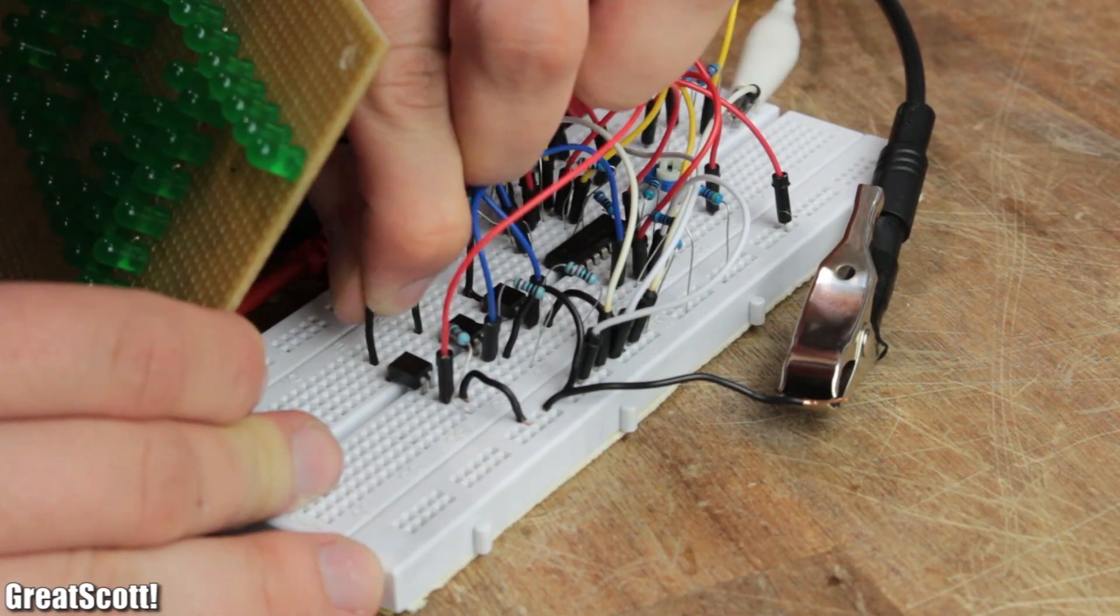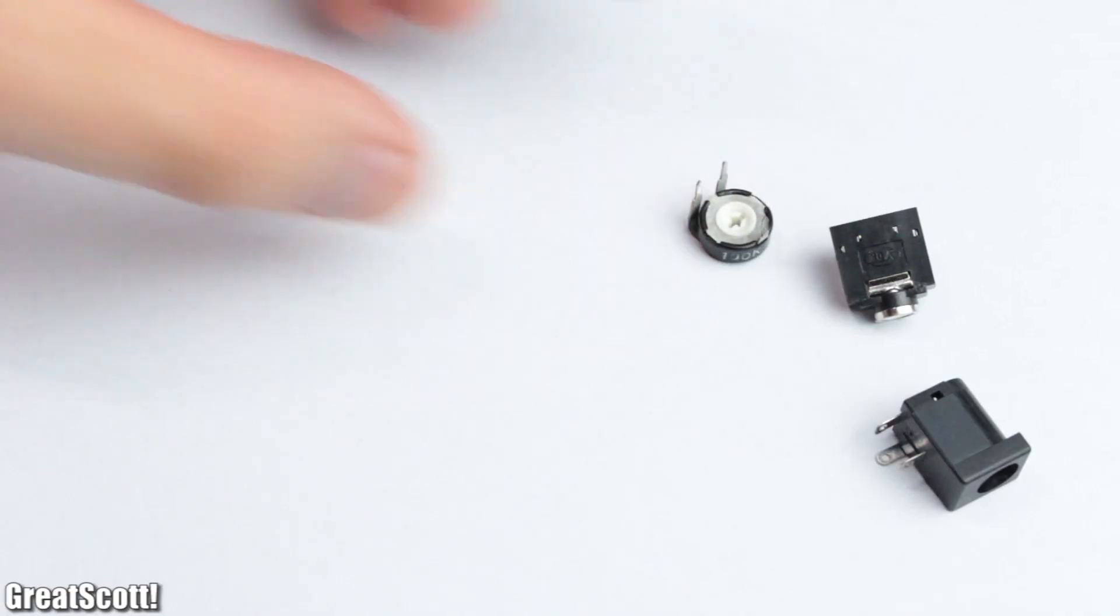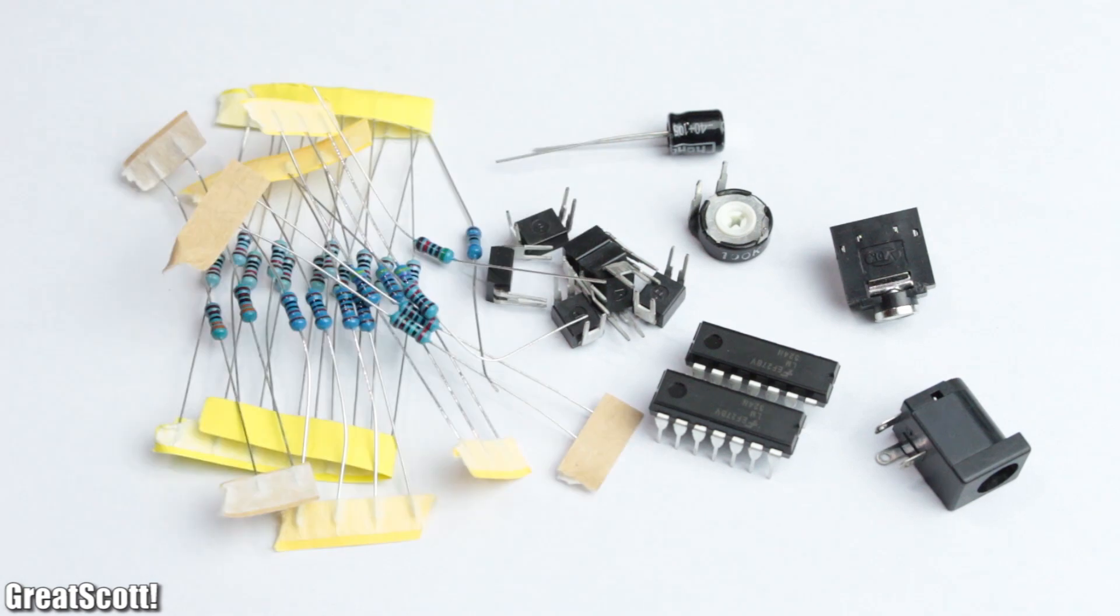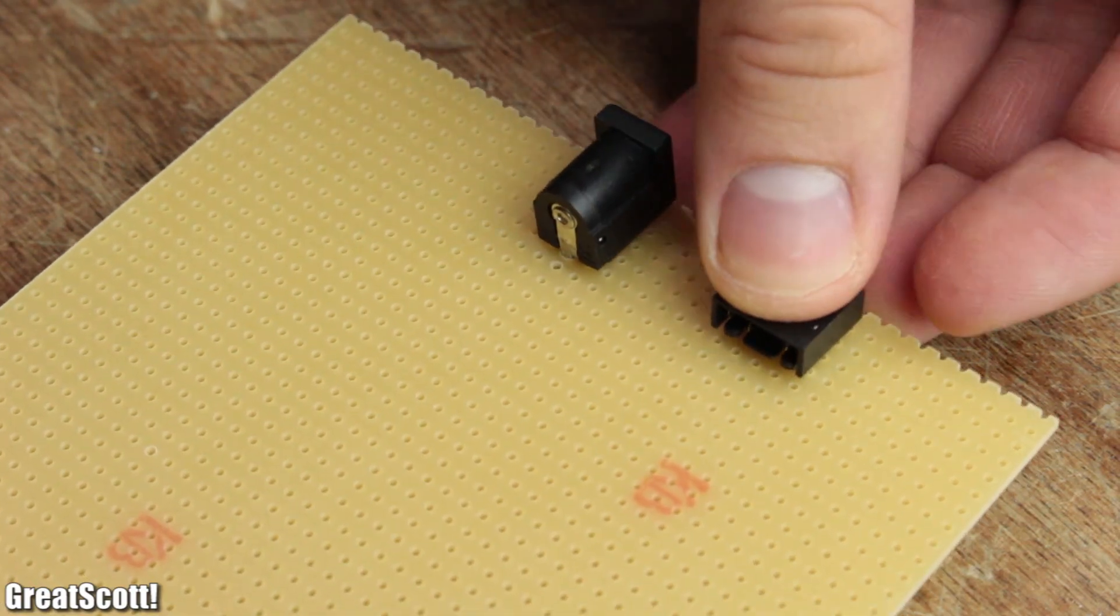So I gathered all the parts I need for the complete control circuits and started by soldering the audio and DC jack to the left side of the board.